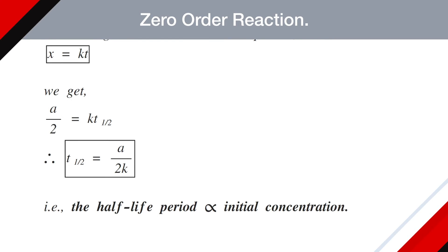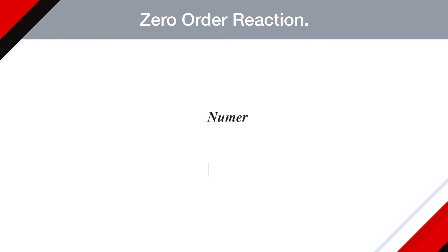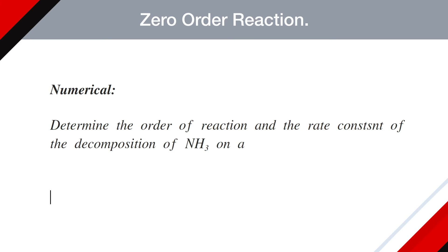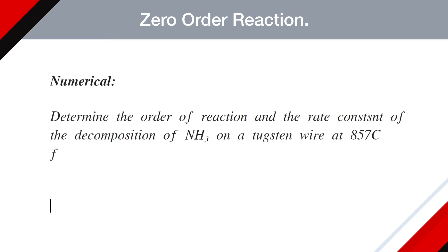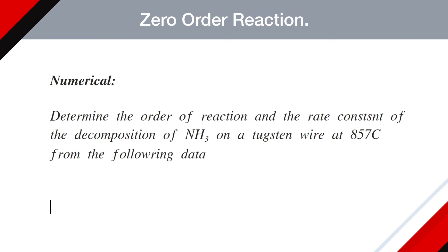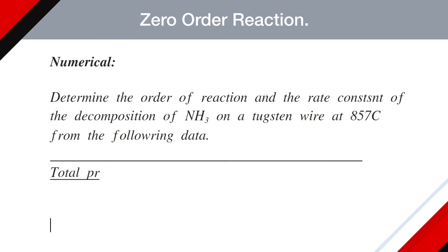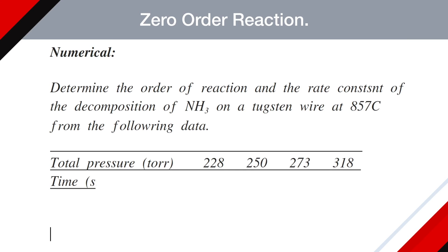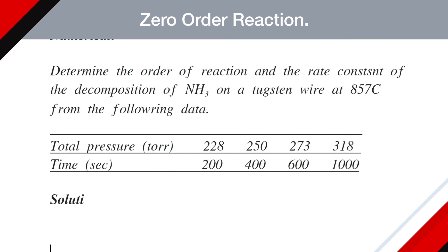Let's try to solve one numerical based on zero order reaction. Determine the order of reaction and the rate constant of decomposition of ammonia on a tungsten wire at 857 degrees Celsius from the following data. Data given is total pressure in torr: 228, 250, 273, and 318, and time in seconds is 200, 400, 600, and 1000. Let's try to solve this problem.